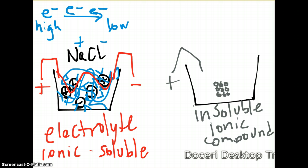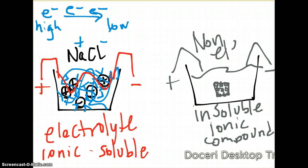With an insoluble ionic compound, if you connect a positive and negative charge to that solution, none of those charges can move because they're all bound together in a crystal. So this would be a non-electrolyte. To summarize: if an ionic compound is soluble it is an electrolyte; if it's ionic and insoluble, it's not an electrolyte.